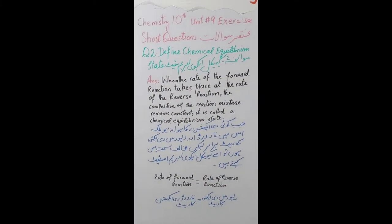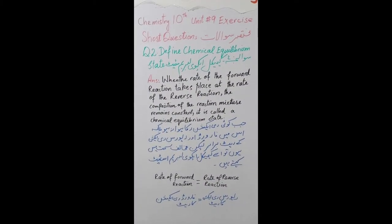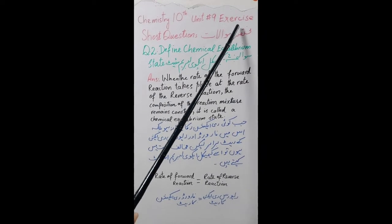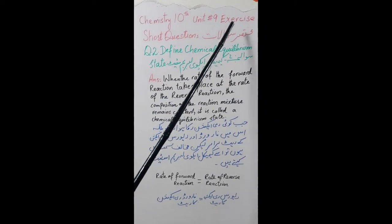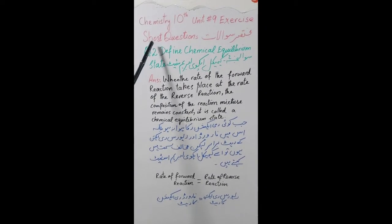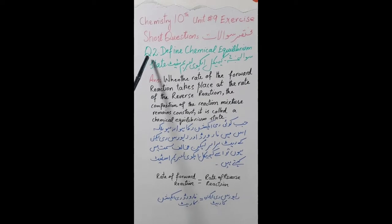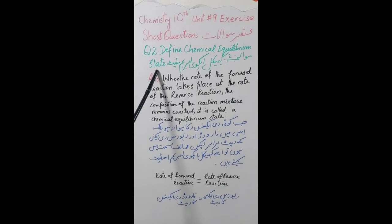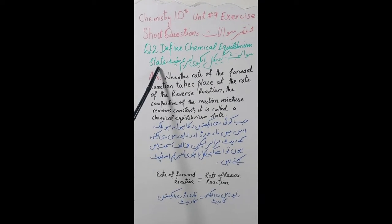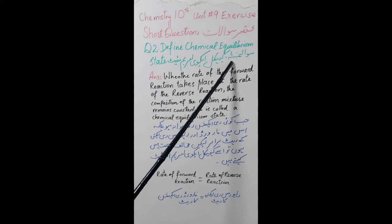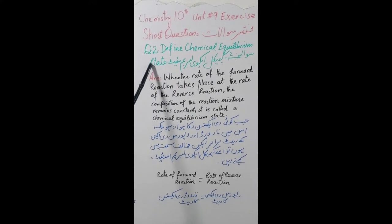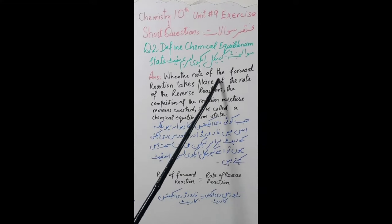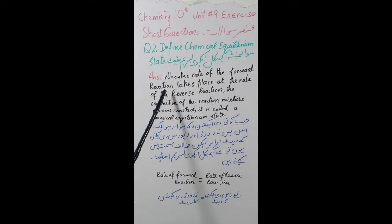Chemistry 10th, Unit 9, Exercise short questions, question number 2: Define chemical equilibrium state. Answer: When the rate of forward reaction...